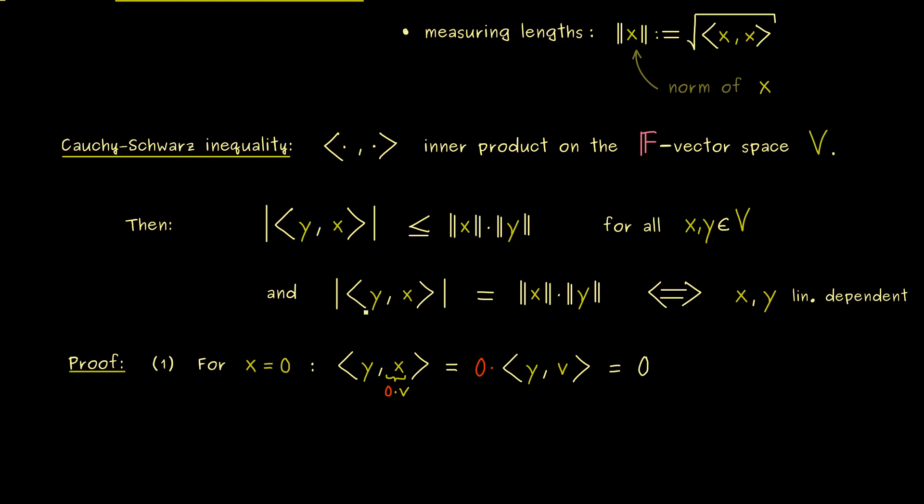Hence, if the 0 vector is involved in the inner product, the outcome of the inner product is definitely 0. Moreover, we also see that the Cauchy-Schwarz inequality is definitely satisfied, because the right hand side is also equal to 0. So you see, this was a simple case and we got it out of the way.